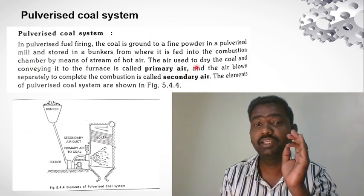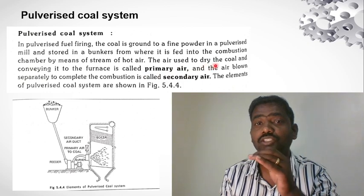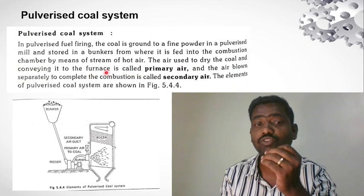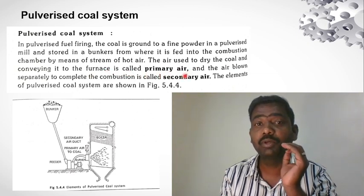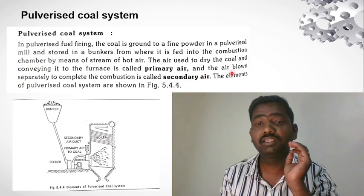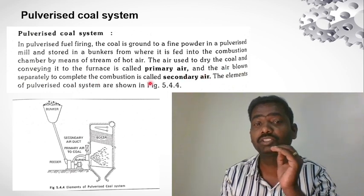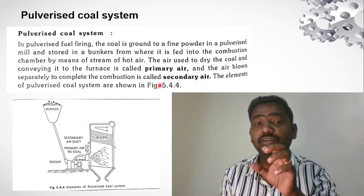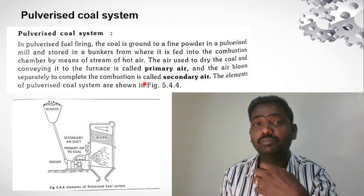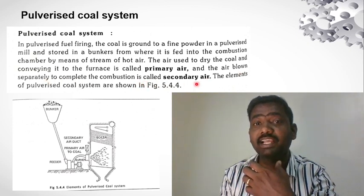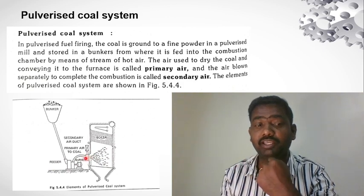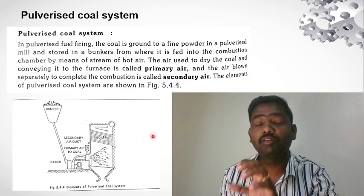The air used to dry the coal and convey it to the furnace is called primary air. The air blown separately to complete the combustion is called secondary air. This is the pulverized coal system.